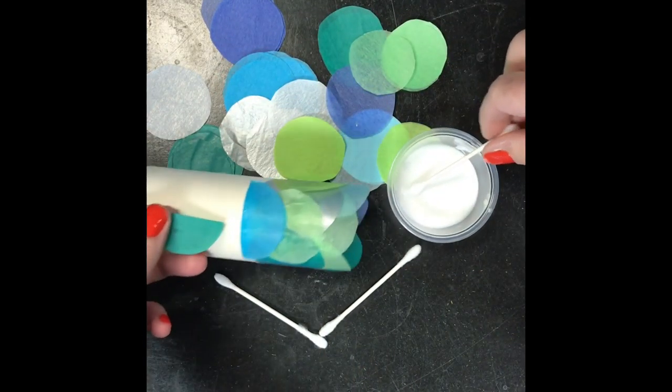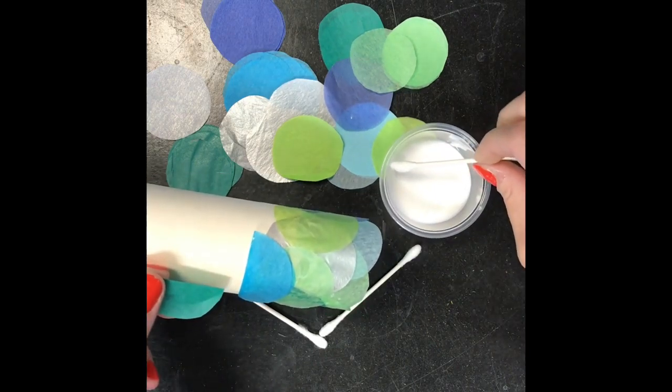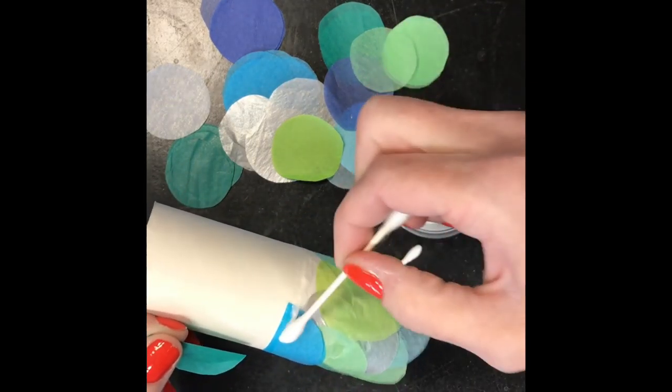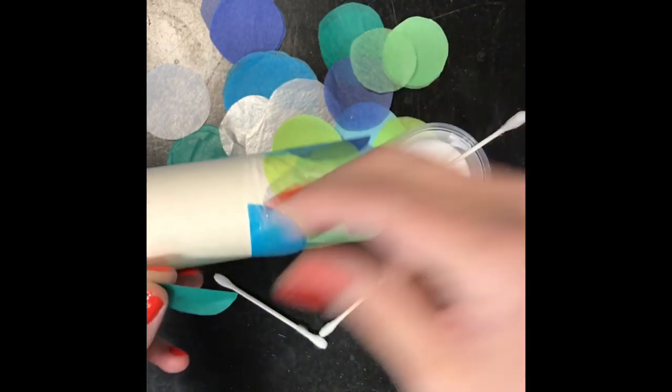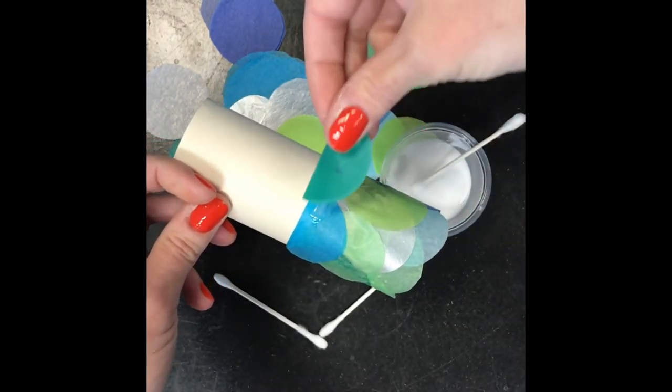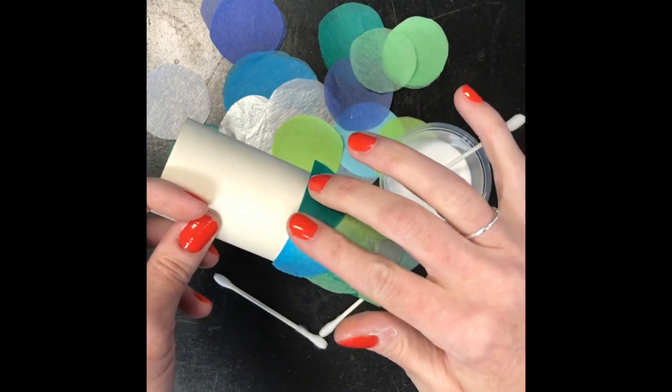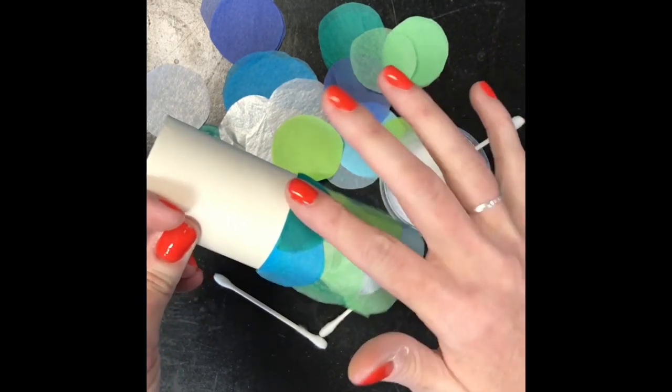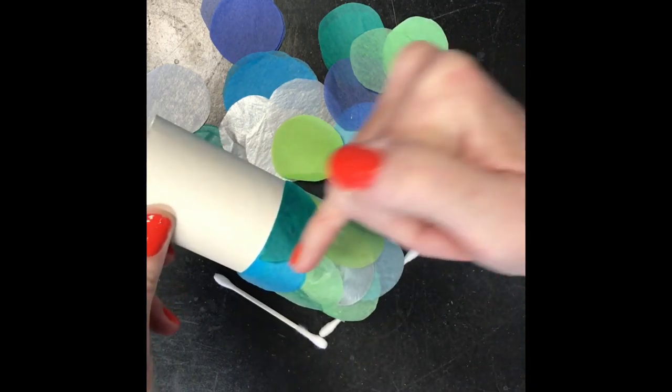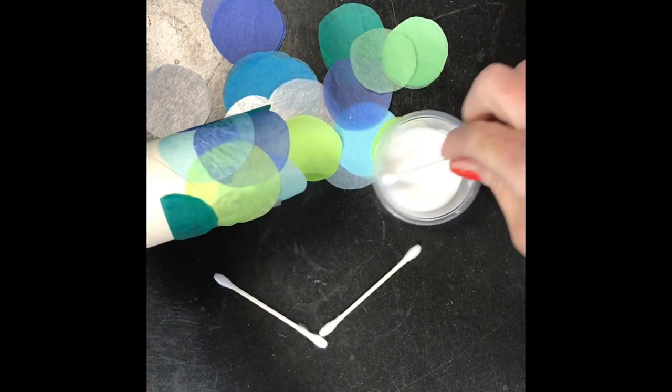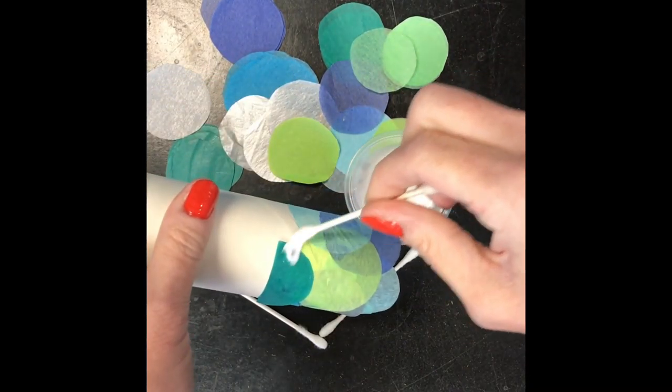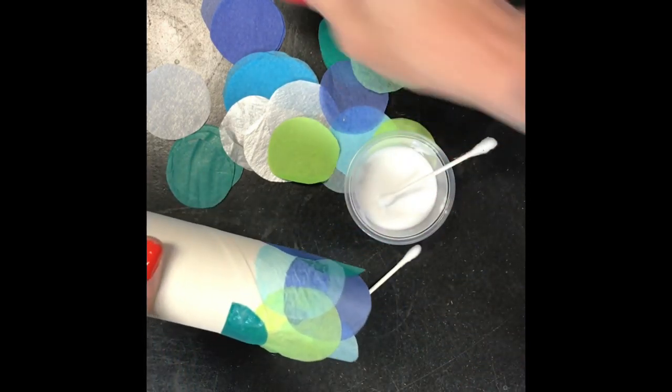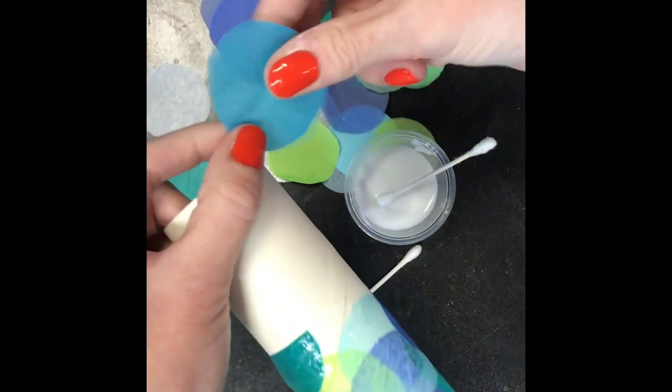Fold it in half, add glue, and then set that right on top and tap it down to make sure it stays in place. We're going to keep going around and around. Each layer is going to build on the one underneath it, layering over each other left to right and top to bottom as well.